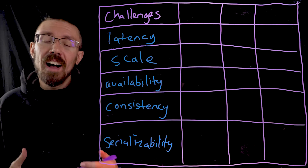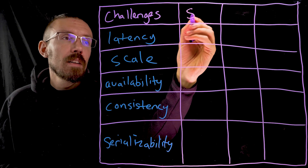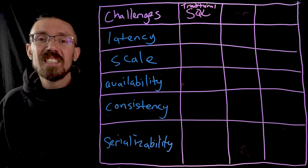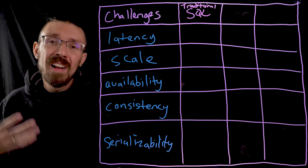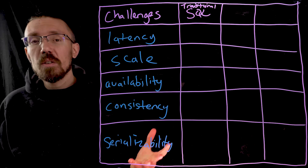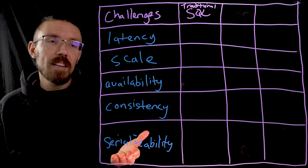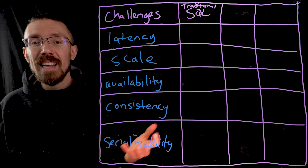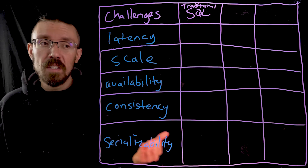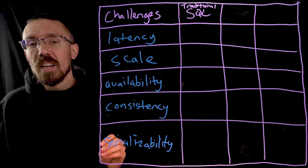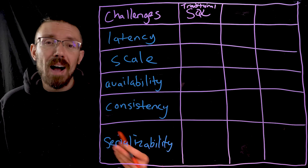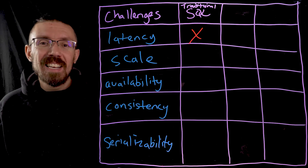Now let's talk about the different database options. The first and most traditional option is a SQL database — SQLite, MySQL, Postgres, that kind of relational database. It's been around for decades, it's tried and true, it works. But is a traditional SQL database a good option for building a gambling app? Let's assess it against our five challenges. Starting with latency: traditional SQL databases were not built with multi-region in mind. You can tack that functionality on, but it's a lot of engineering work and ops work to maintain — they just weren't built to do that.